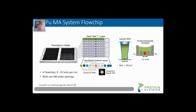The heart of the system is the flowchip. Here you can see the frame with four flowchips in it, and you can use in your assays between one and four depending on the needs. Each flowchip has eight test lanes and each lane is designated to one sample. So essentially you can do between eight and 32 samples.